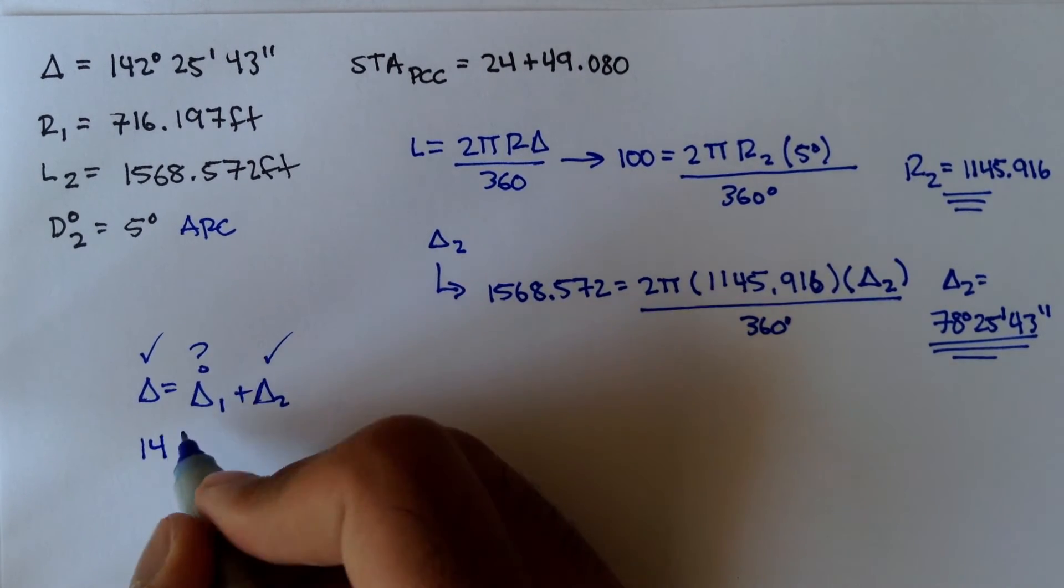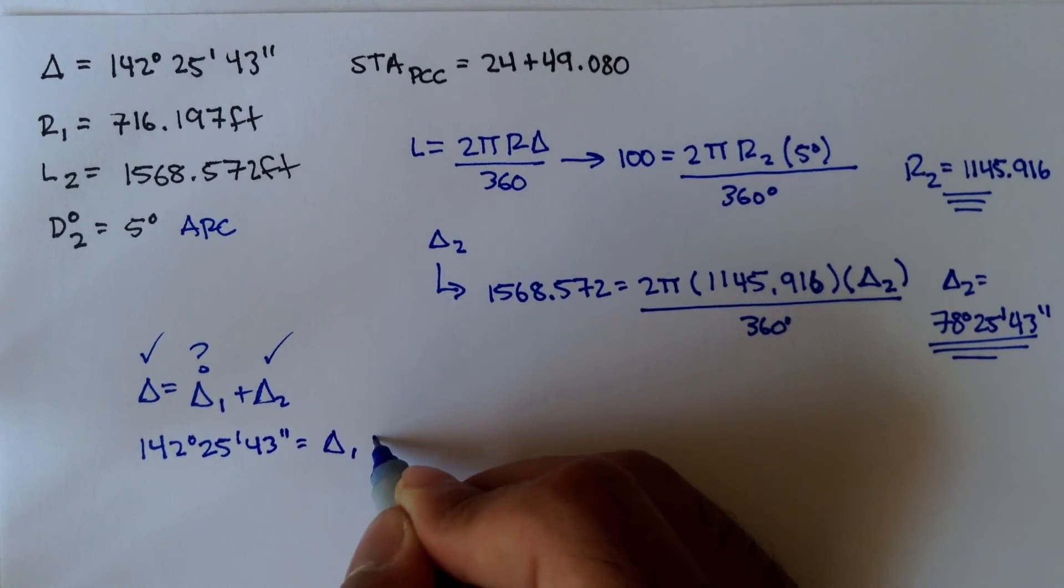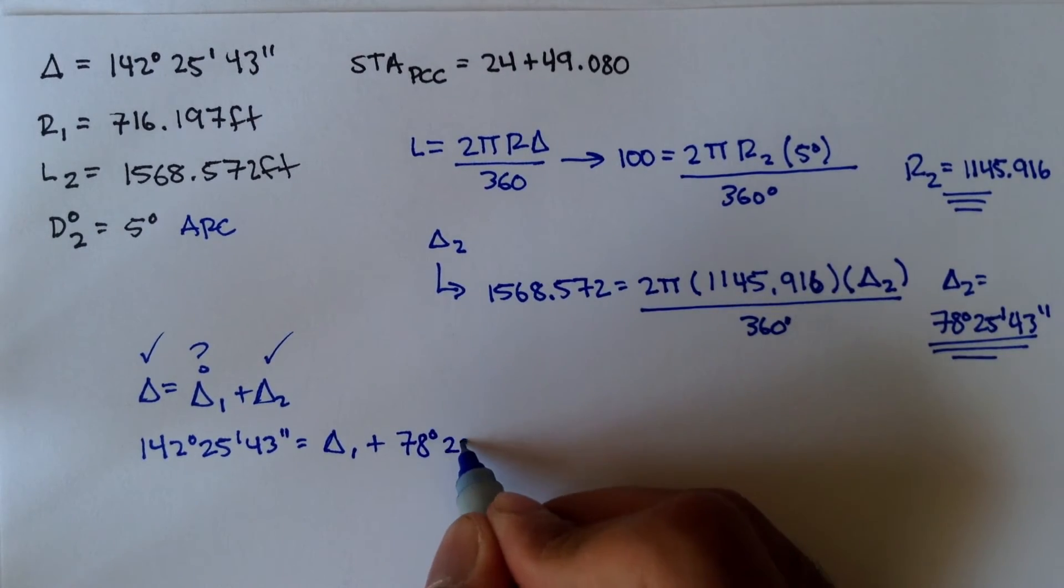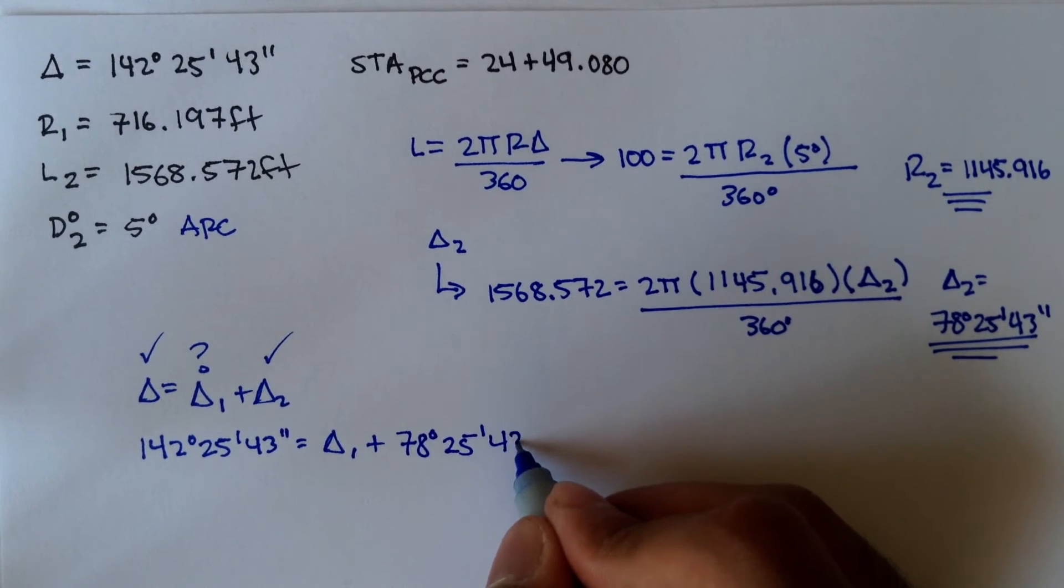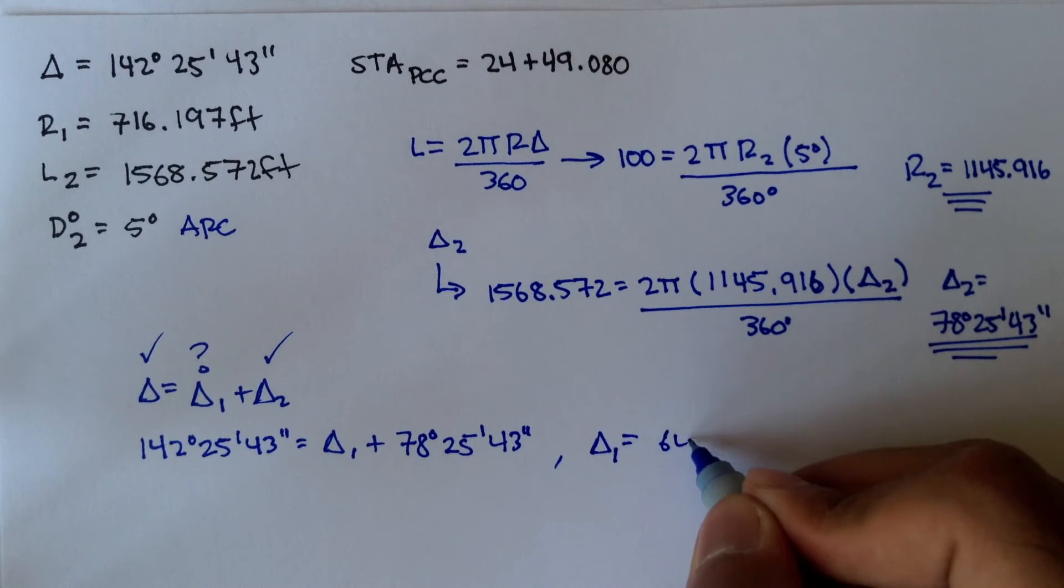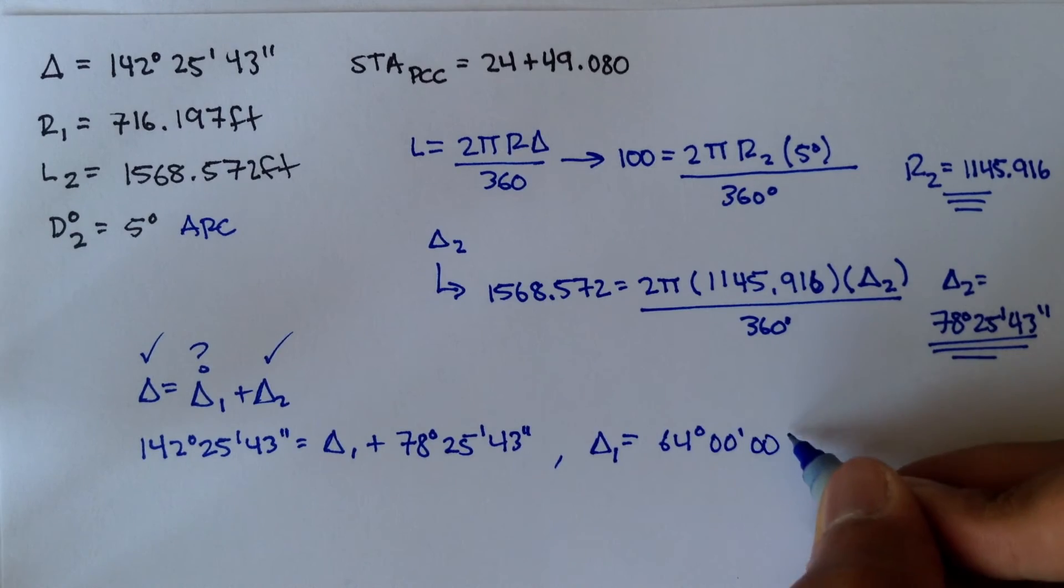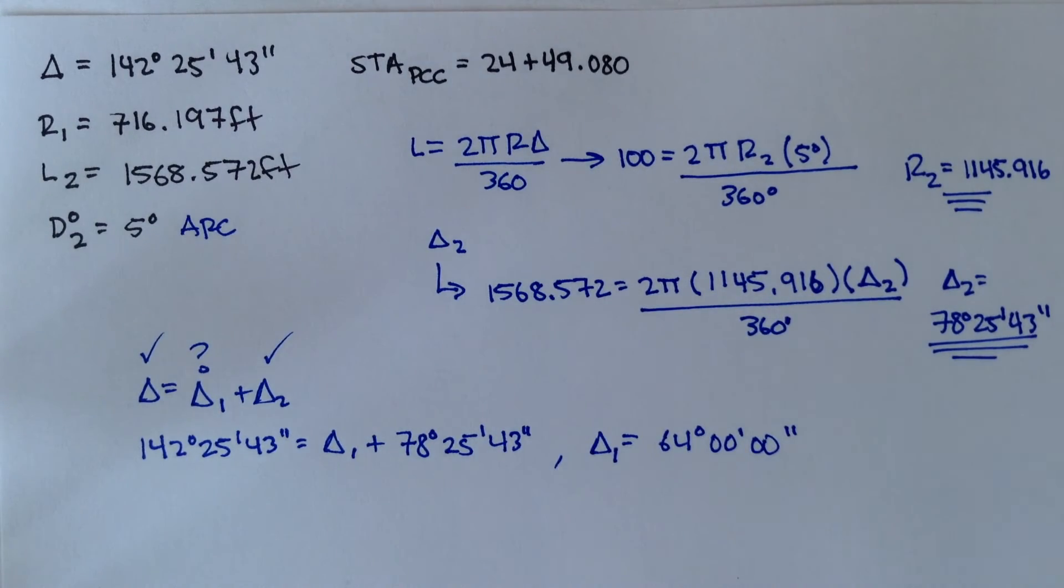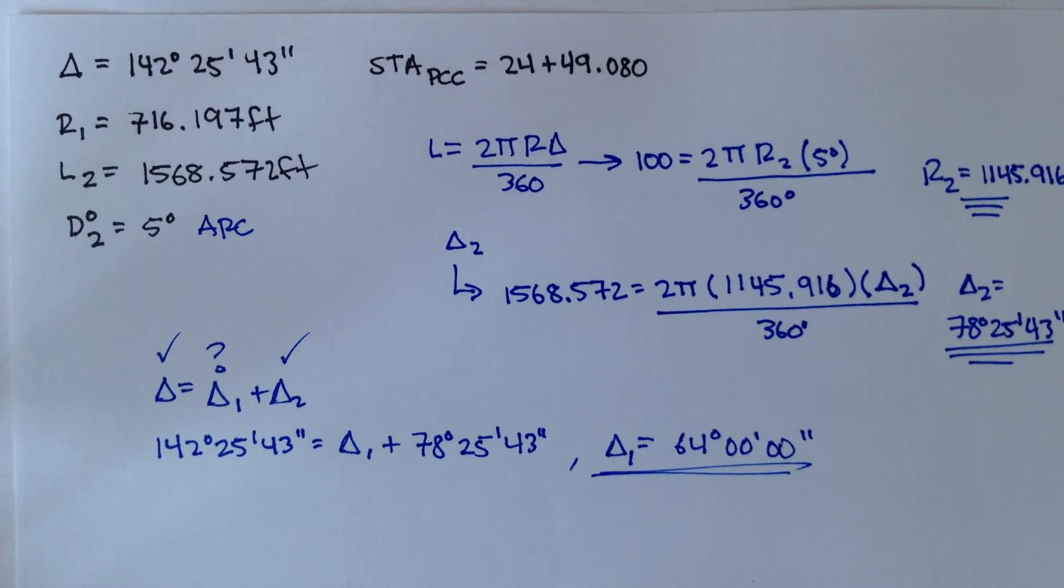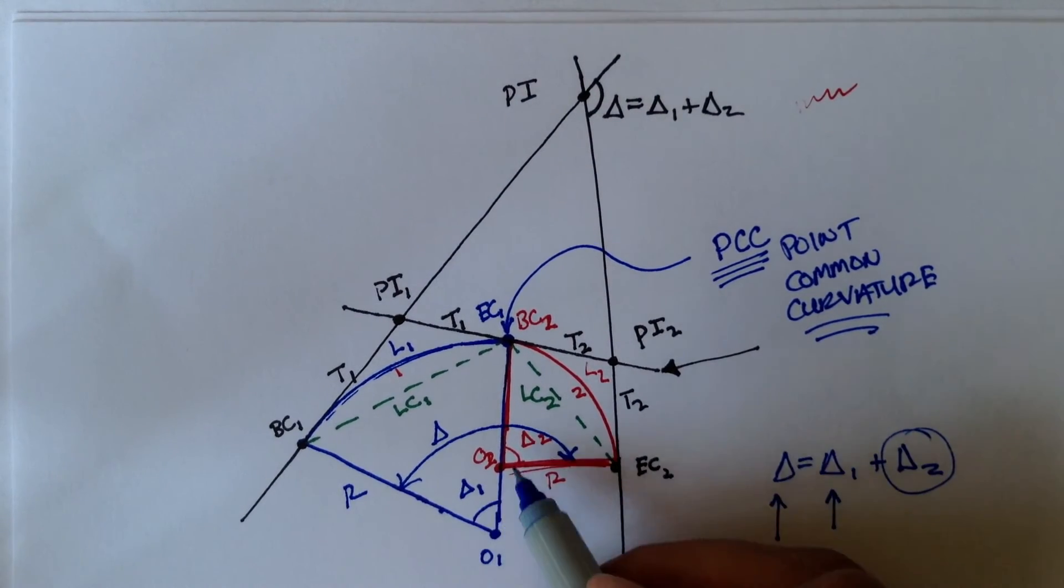Total delta is 142 degrees 25 minutes 43 seconds. That's equal to delta 1 plus delta 2. And delta 2 is 78 degrees 25 minutes 43 seconds. We solve for delta 1. Delta 1 should be 64 degrees, 0 minutes, 0 seconds. So this is delta 1. This is the interior angle for curve 1. So at this point, let's look back to our diagram. We figured out what delta 1 is and delta 2.